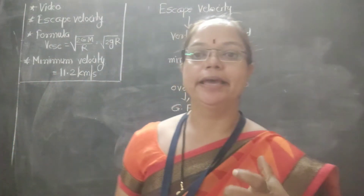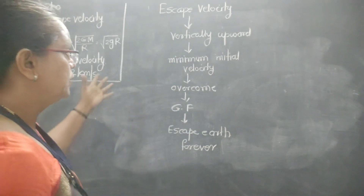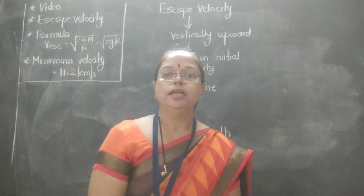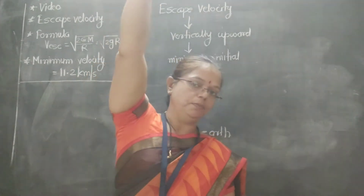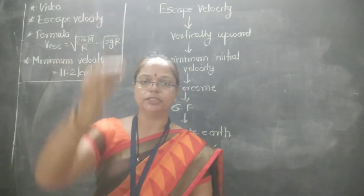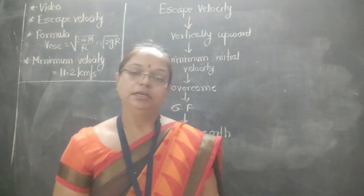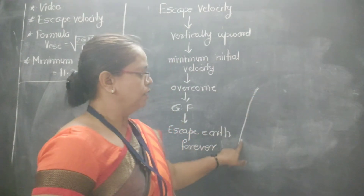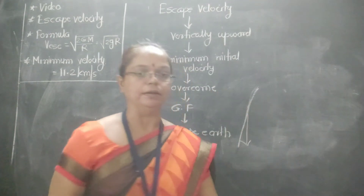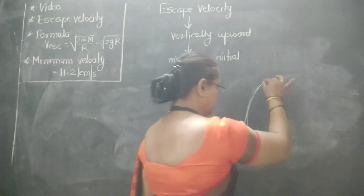In the last portion of this chapter, we discuss escape velocity. If I throw any body upward, it will move in the upward direction because of that velocity. But gravitational force is opposing — pulling that body in the downward direction. The velocity of that body decreases because gravitational force is pulling it downward, and after attaining some height, it moves back down.